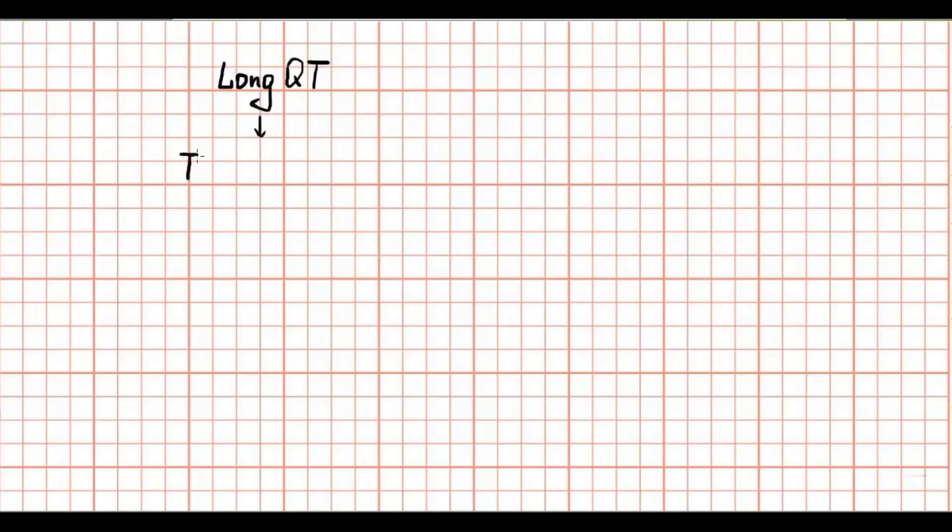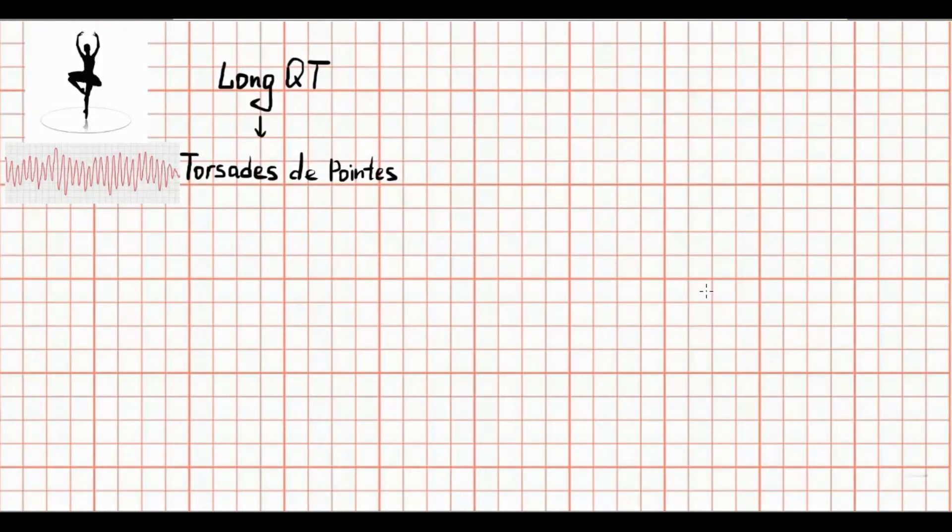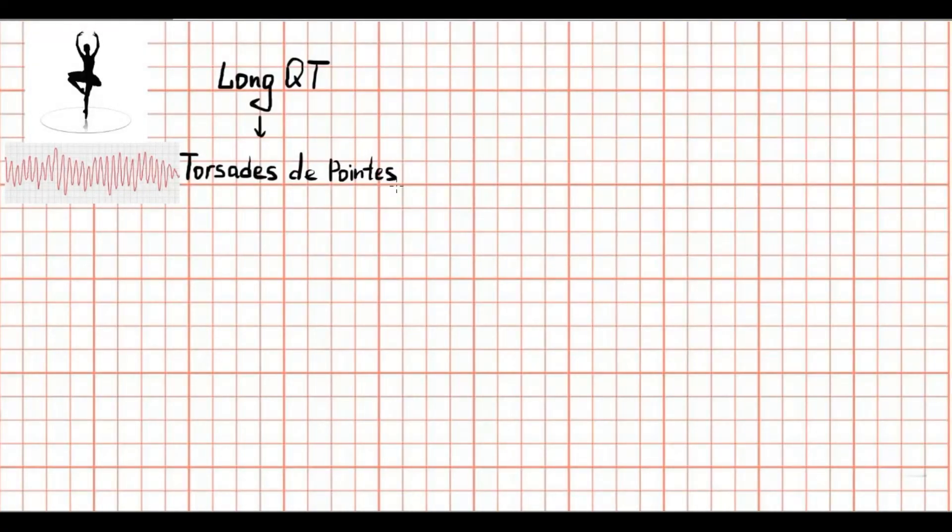Why is it so important? A long QT interval is related to a specific type of ventricular tachycardia which is called torsades de pointes. It has a characteristic morphology in which the QRS complex twists around the baseline.